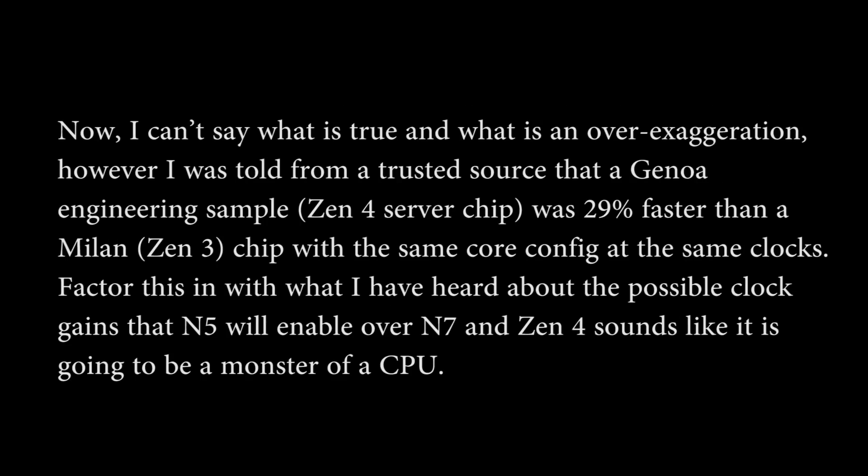Now, I can't say what is true and what is over-exaggeration. However, I was told from a trusted source that a Genoa engineering sample — Zen 4 server — clocked 29% faster than Milan Zen 3 with the same core config at the same clocks. Factoring in what I've heard about the possible clock gains that N5 will enable over N7, Zen 4 sounds like it's going to be a 'monster of a CPU.'